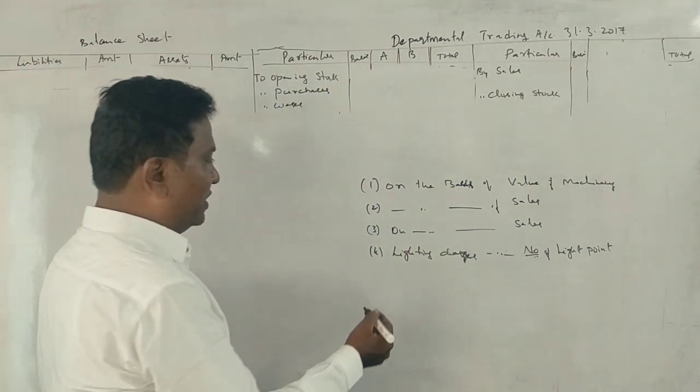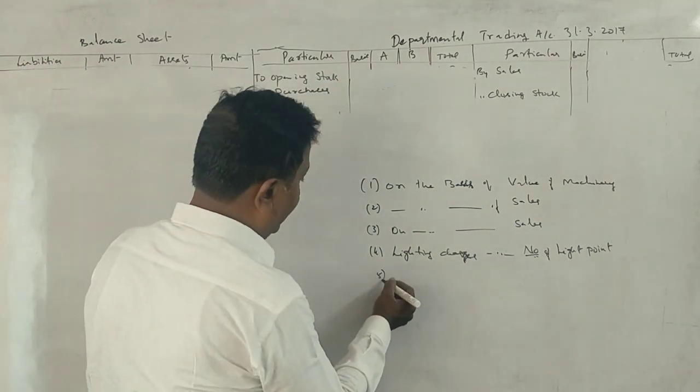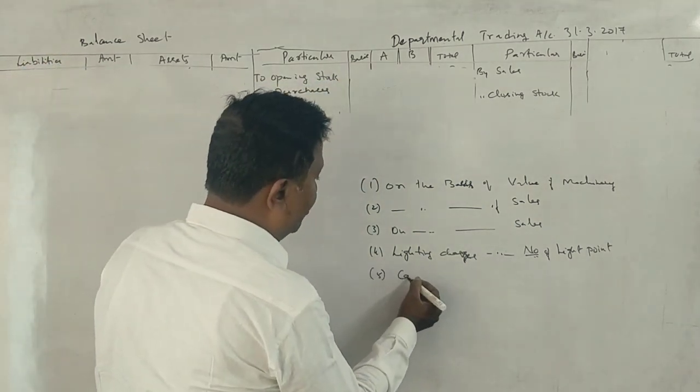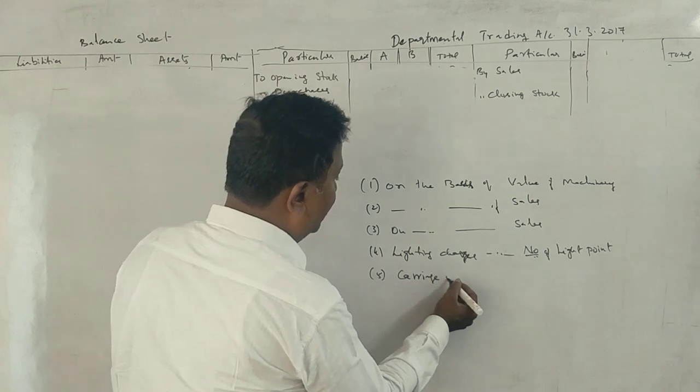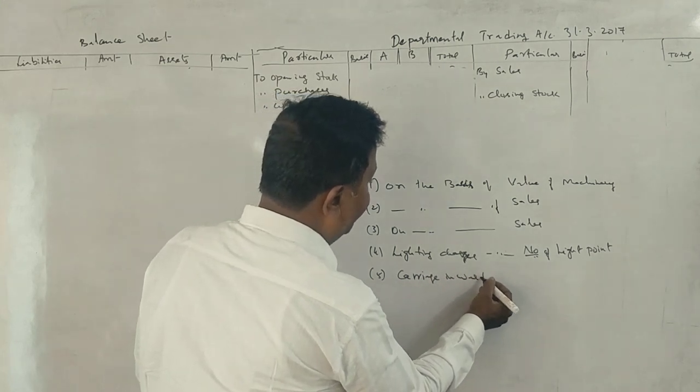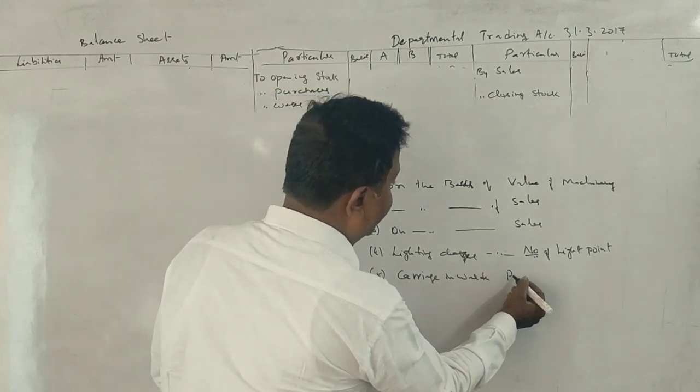Next: carriage inwards. Carriage inwards is allocated on the basis of purchases. Very good — carriage inwards on the basis of purchases.